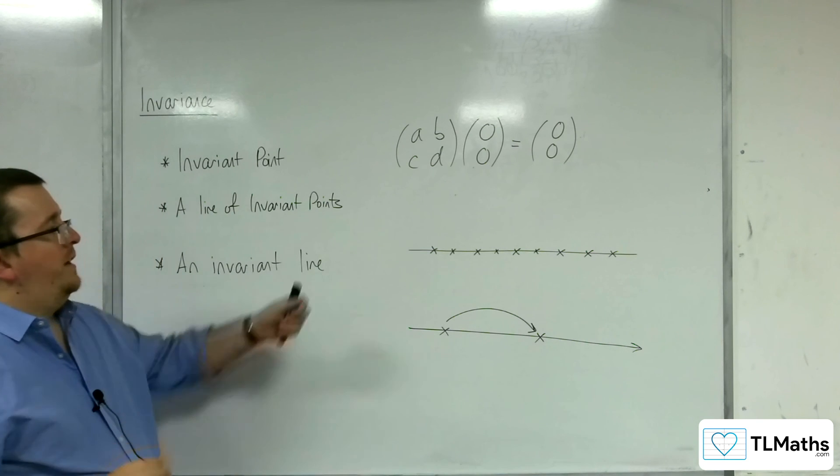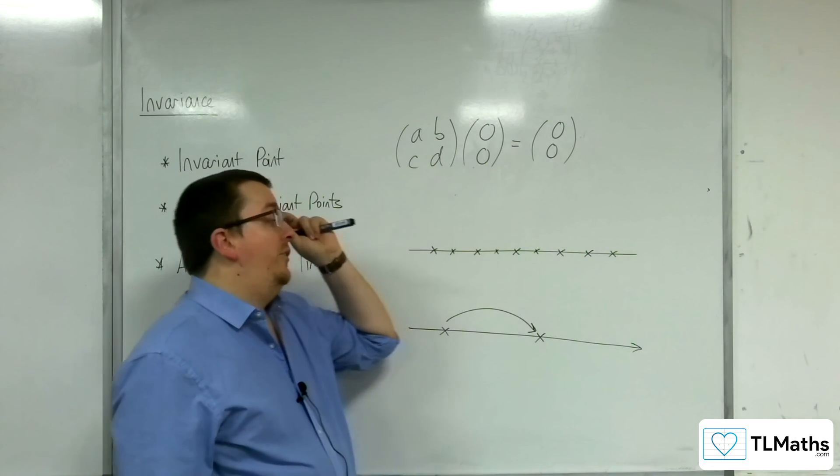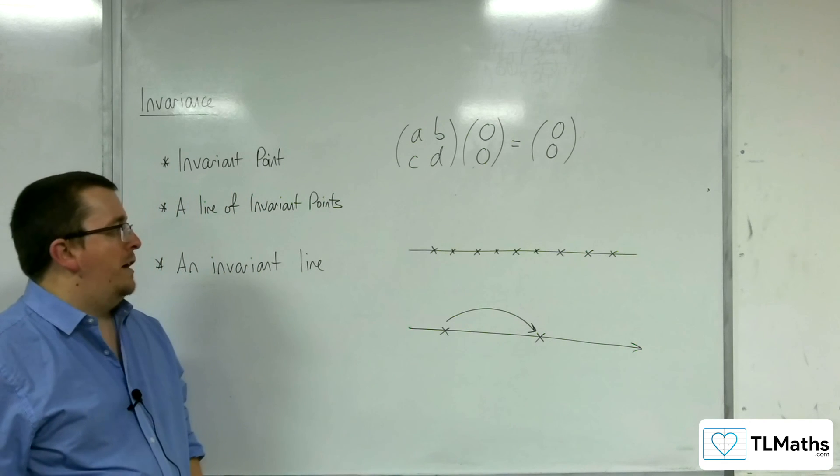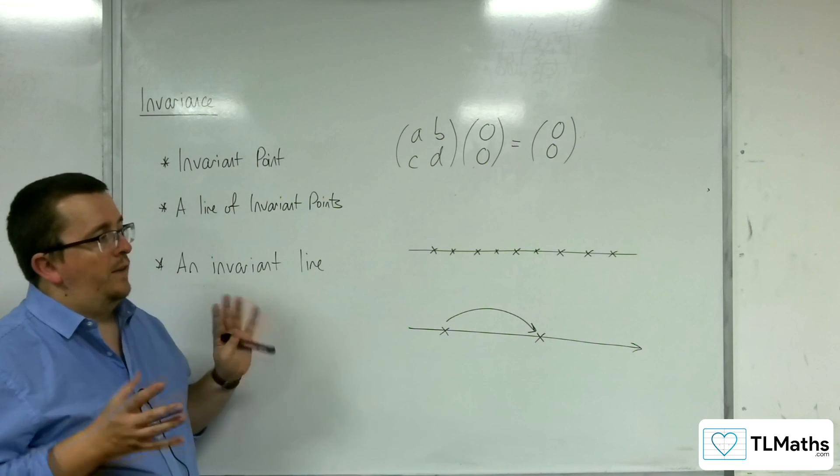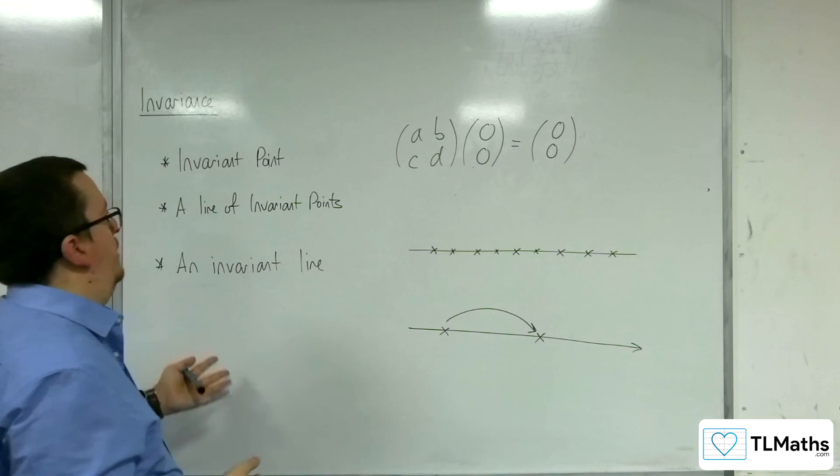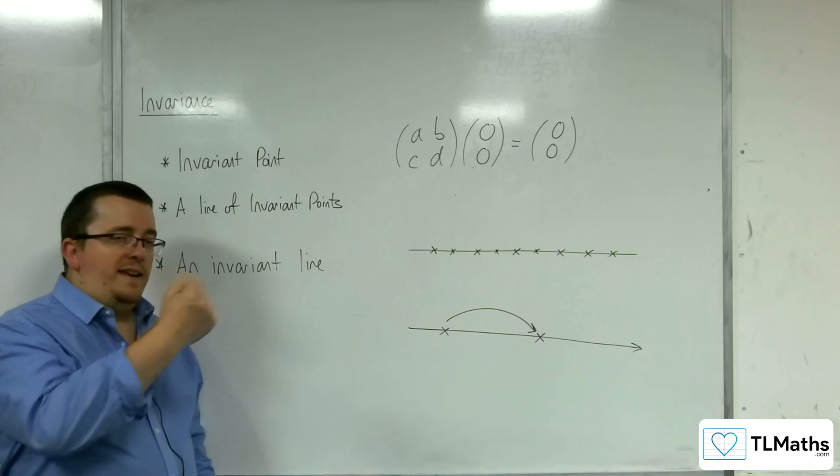So you can kind of think of this situation as a mirror line, whereas this you might think as a stretch in a certain direction. Now, that's not just meaning that those two transformations are the only ones that will create a line of invariant points and an invariant line. But it gives you something to kind of connect it to.